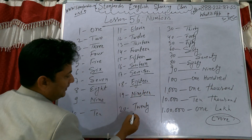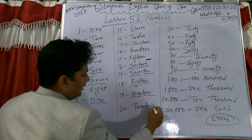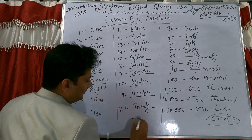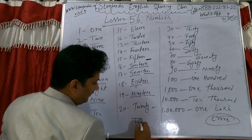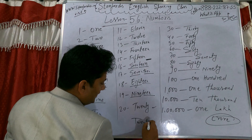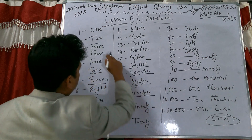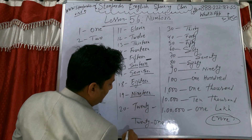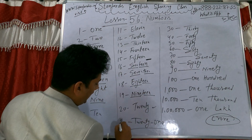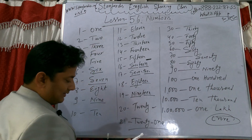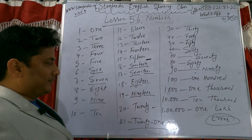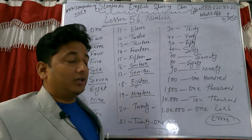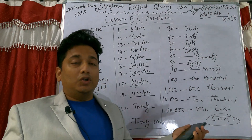If you have twenty-one — twenty plus one — it becomes twenty-one. Same concept: thirty, thirty-one, thirty-two.